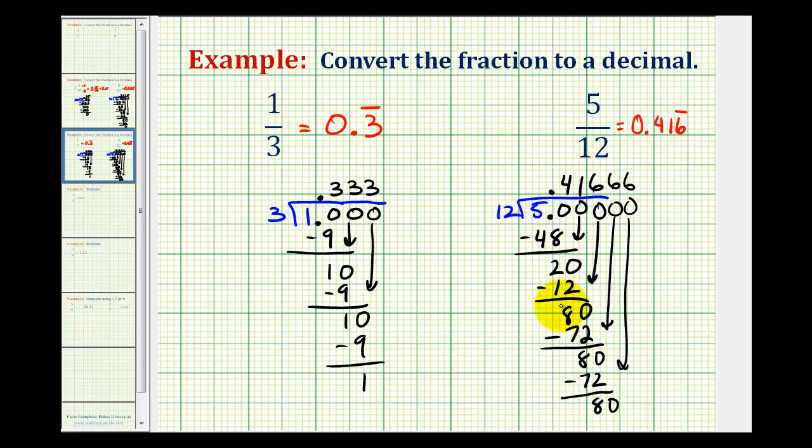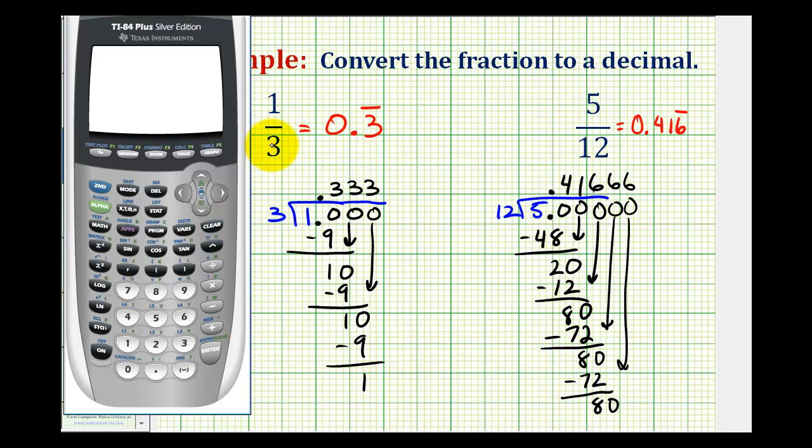And while we're here, let's go ahead and check these on the calculator. So what we'll do is just perform the division. So for the first example, we have one divided by three, which verifies our decimal. Notice how the calculator doesn't have a way to represent repeating decimals correctly. It just shows a certain number of digits.